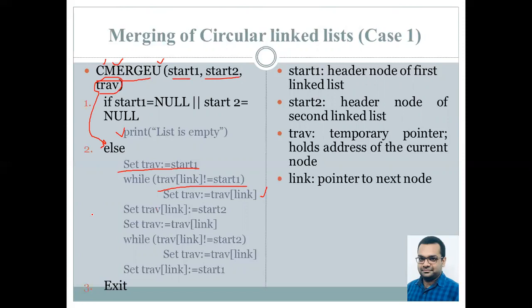Upon reaching the last node of the first circular linked list, we assign it the address of the first node of the second circular linked list. Then we increment its value and search for the last node of the second circular linked list by constantly incrementing. Upon reaching the last node of the second circular linked list, we assign it the address of the first node of the first circular linked list to maintain the property of the circular linked list.